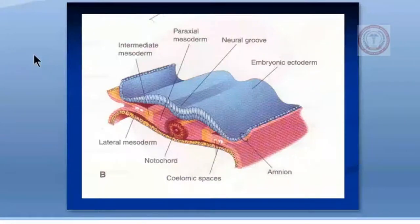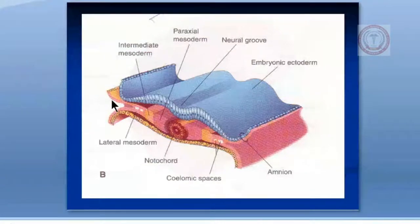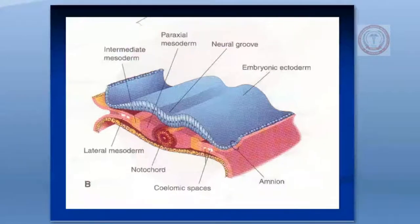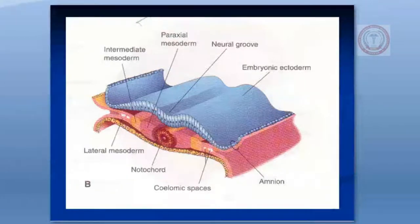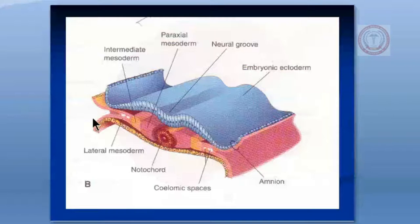This is the transfer section of the disc. This is the ectoderm layer, this is the mesoderm layer, and in between are the endodermal cuboidal cells. This is the portion of the neural groove, and here is the position of the notochord. As you know, the notochord forms the axis of the skeleton — it will form the axis around which the vertebral bodies will form.